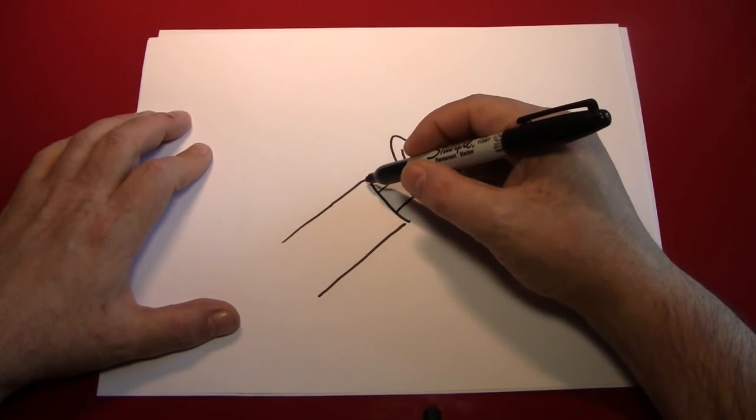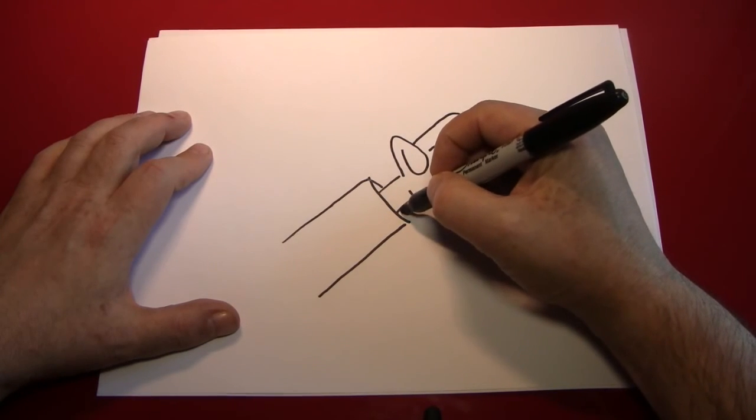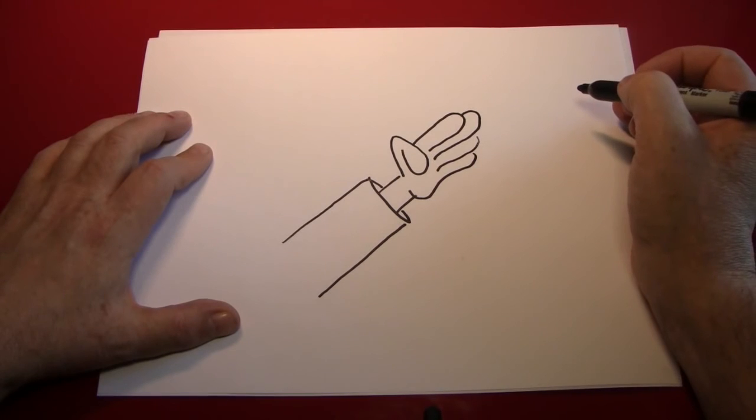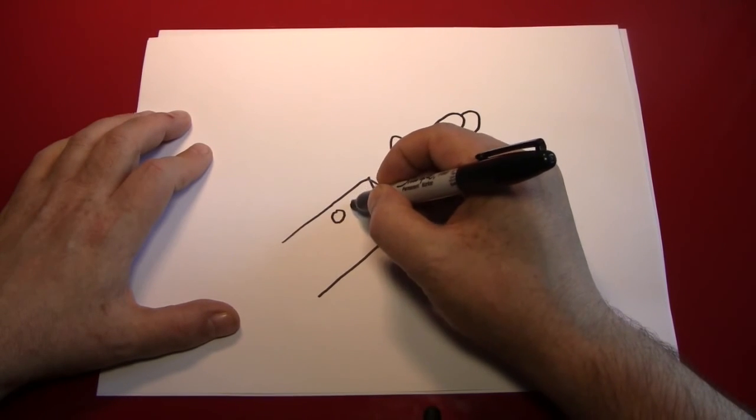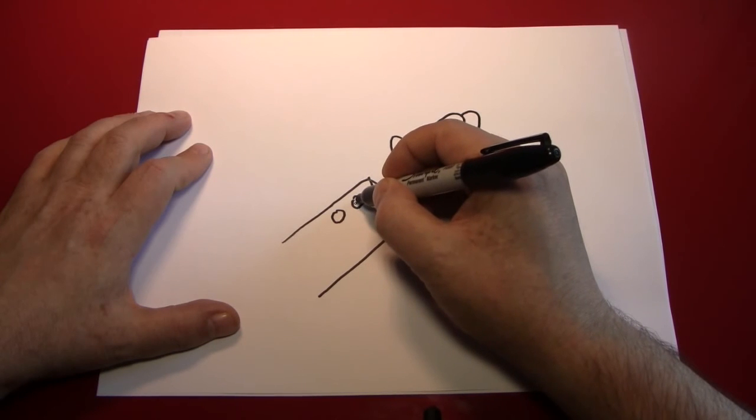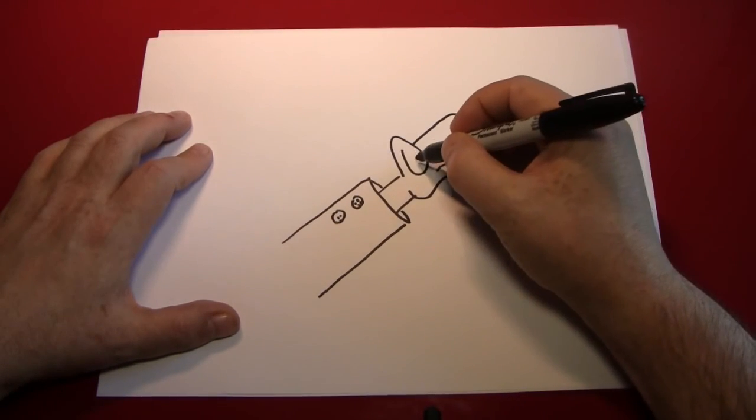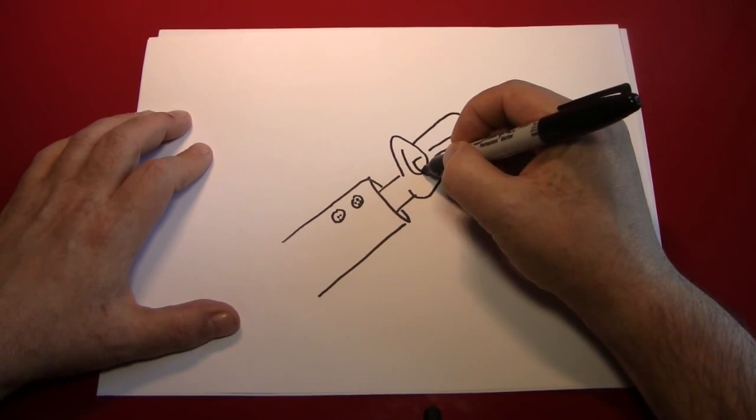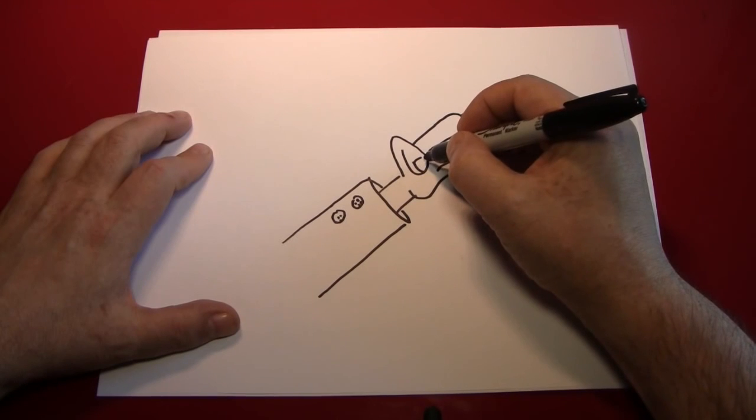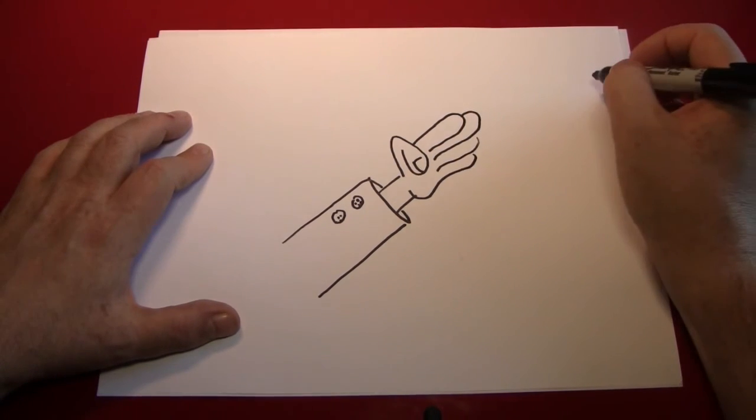Next we can finish this up with some details. The back of the shirt sleeve like that. Maybe some buttons on the shirt sleeve. A fingernail on the thumb, which I guess is a thumbnail. And you can make that by just one line across and one line up like that.